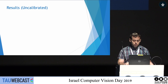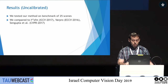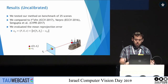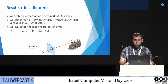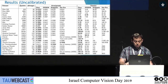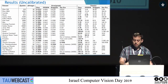For the uncalibrated case, we tested our method on a benchmark of 25 scenes and compared to state-of-the-art methods. We evaluated the mean reprojection error — the distance in pixels between the projected reconstructed point and the measured point. Our errors in pixels are almost always better than previous methods, and our running time is much faster, since this is the first global approach for uncalibrated structure from motion.